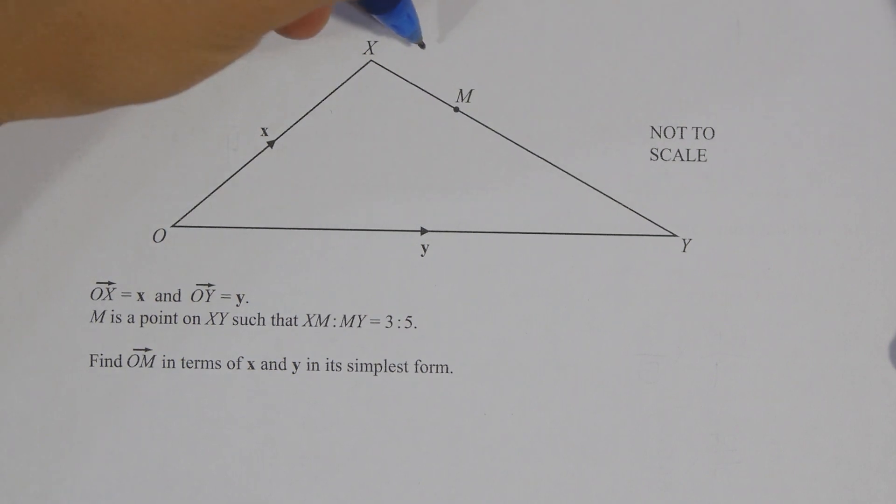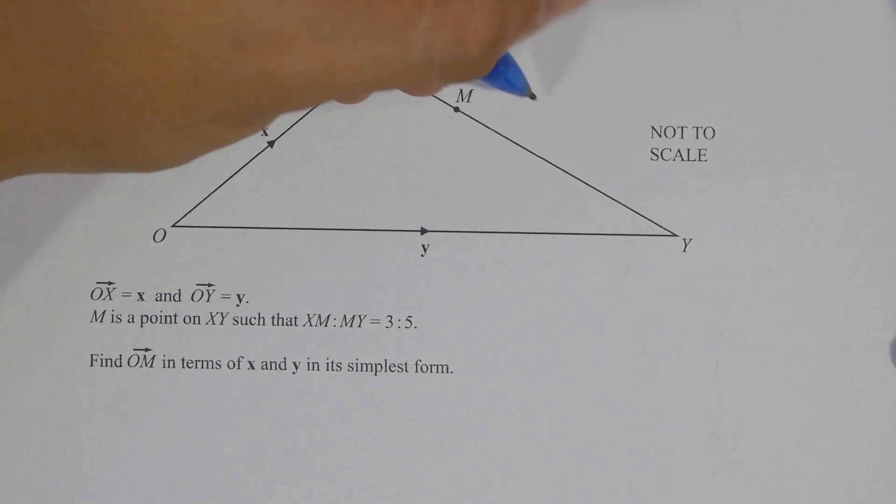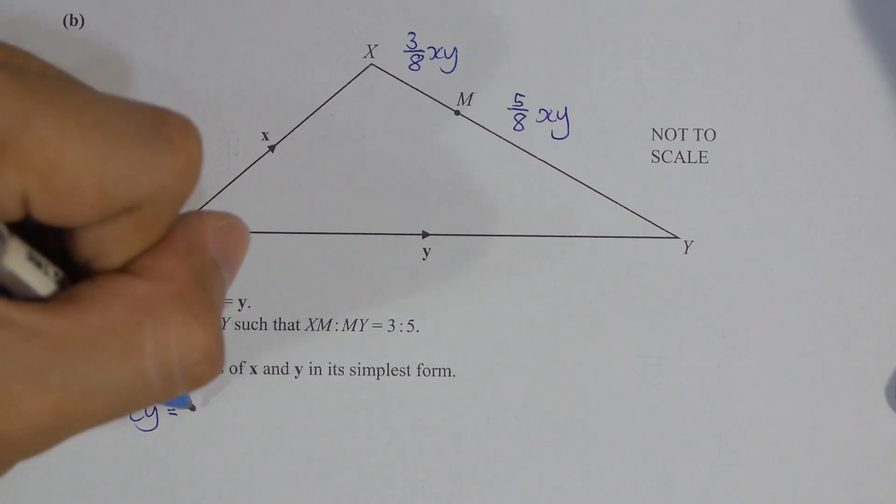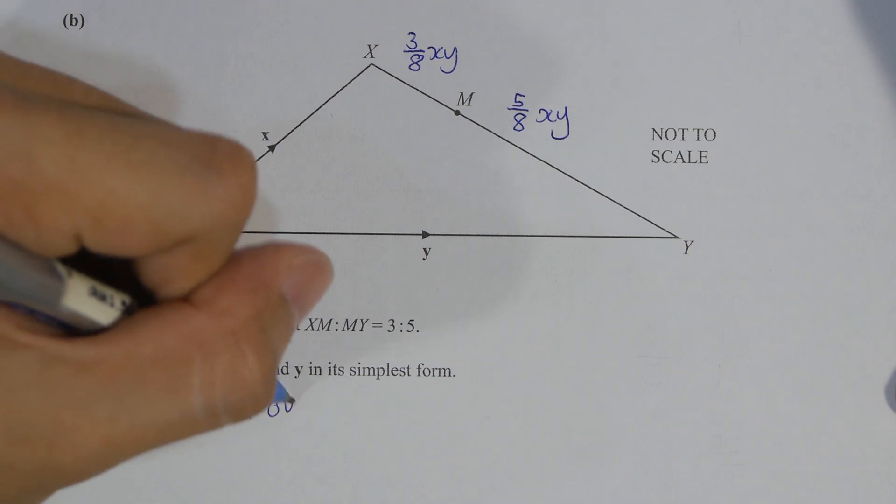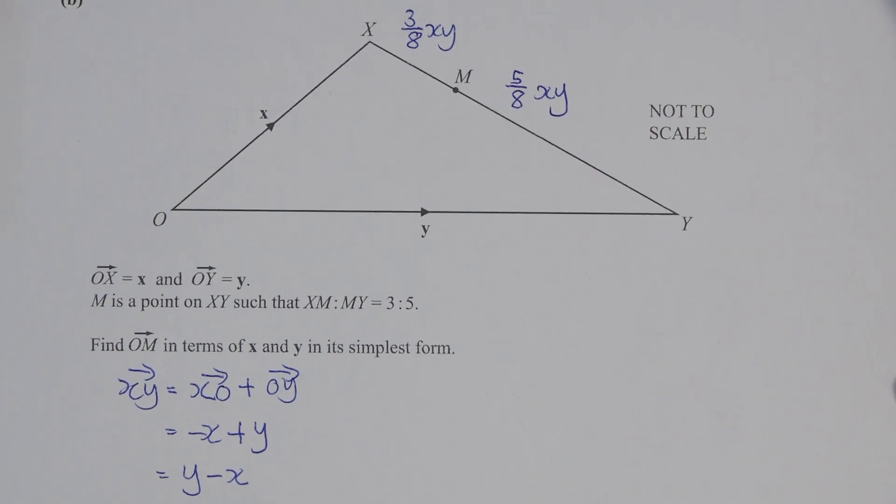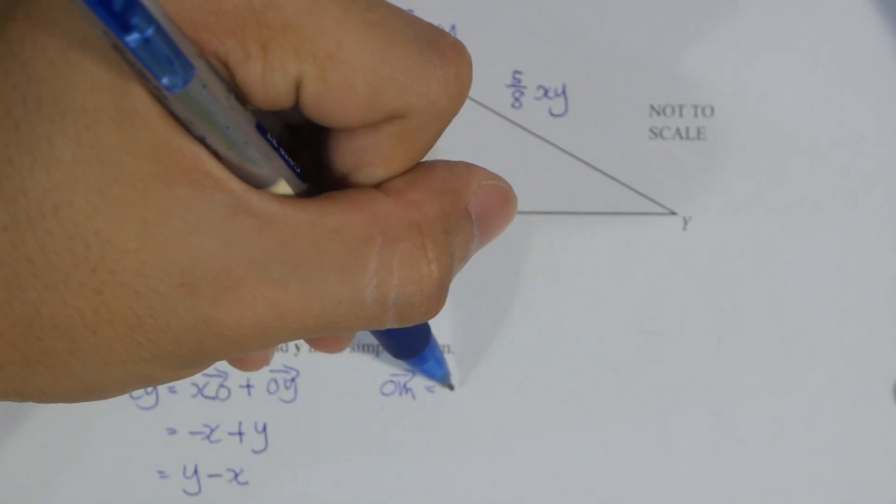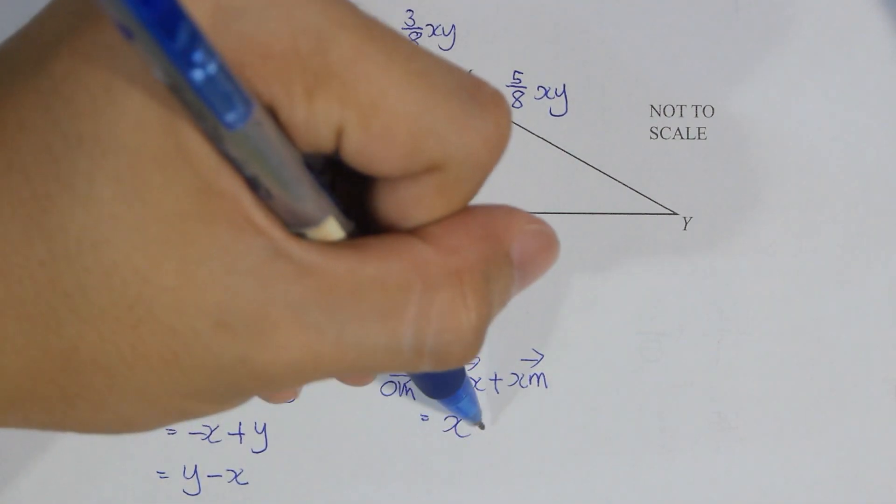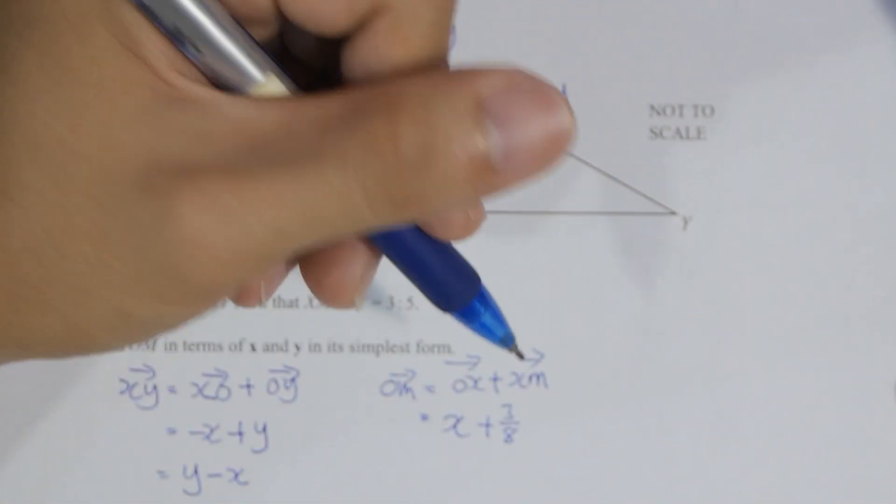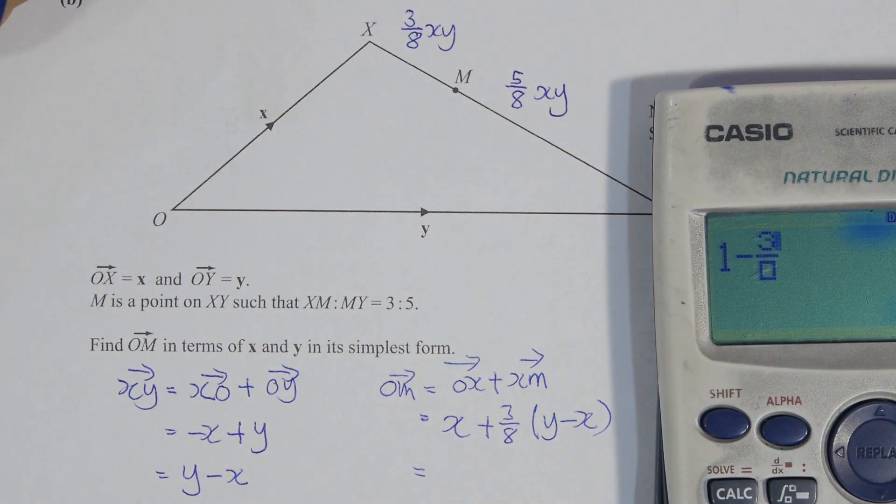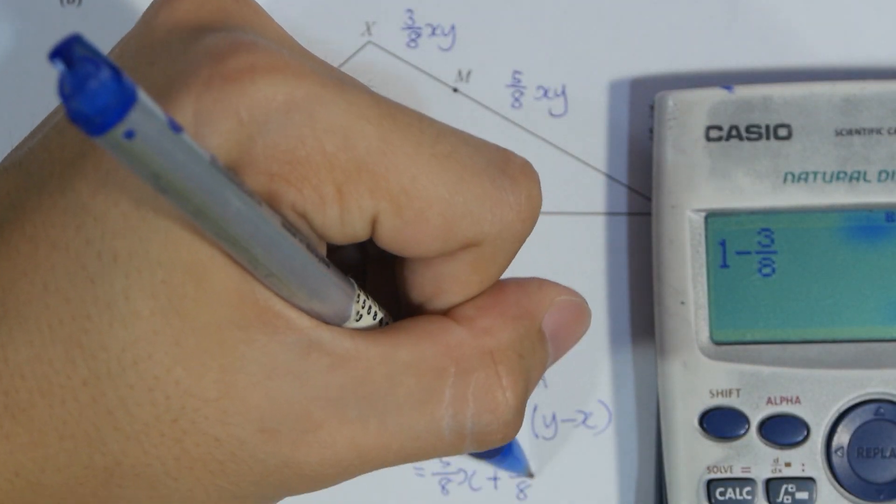For question b, keyword here is actually from the ratio given. XM to MY is actually 3 to 5. So 3 over 8 XY is actually representing XM, whereby 5 over 8 XY is actually representing MY. The first thing you need to do is to identify XY first. XO plus OY equals to Y minus X. For you to find OM, simply take OX plus XM. After calculation you will get X plus 3 over 8 Y minus X. So the final result will actually be 5 over 8 X plus 3 over 8 Y.